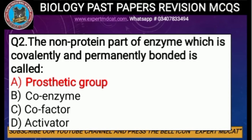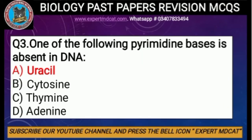Question number three: which one of the following pyrimidine bases is absent in DNA? There are two types of nitrogenous bases — purines (double-ringed) and pyrimidines (single-ringed). Adenine and guanine are purines present in DNA. Among pyrimidines, uracil is the odd one out — it is absent in DNA and is found in RNA instead. The correct option is A, uracil.